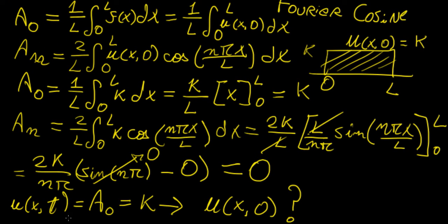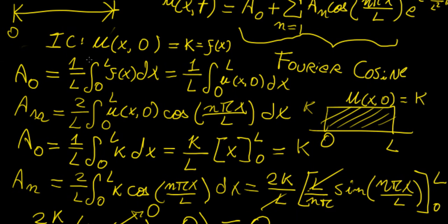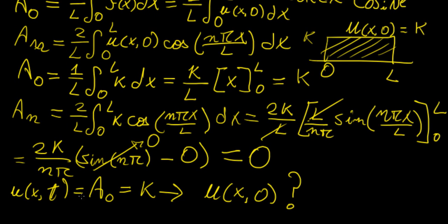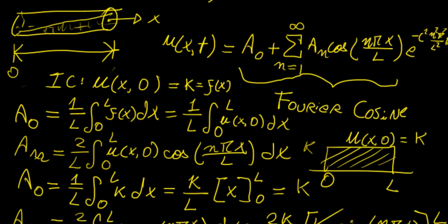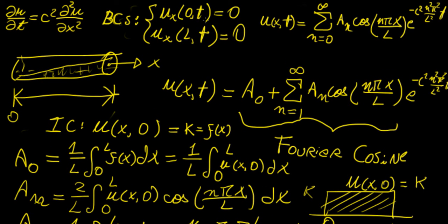So is this a correct solution? Yes — given these boundary conditions and this initial condition, the heat distribution is the same for all space from 0 to L and all throughout time; it remains constant. This illustrates how Fourier series can be used not just for Dirichlet boundary conditions, but also for Neumann boundary conditions, which involve the value of the partial derivatives evaluated at the boundaries. This concept can be extended to higher dimensions, which we'll do in a later video.